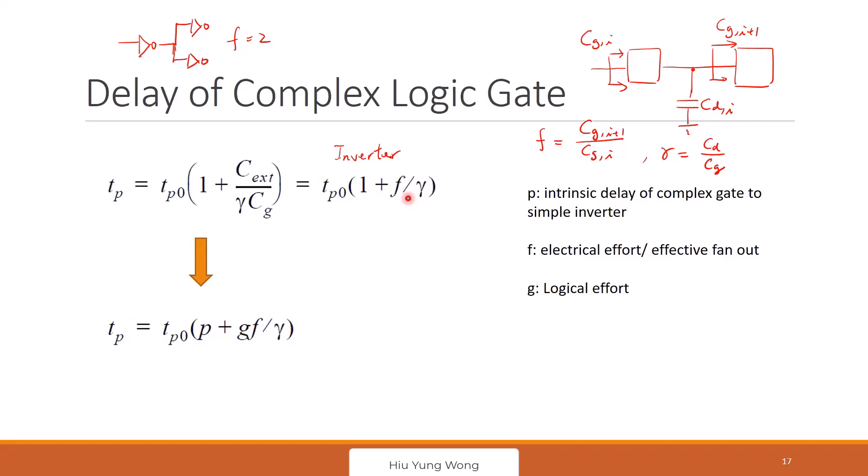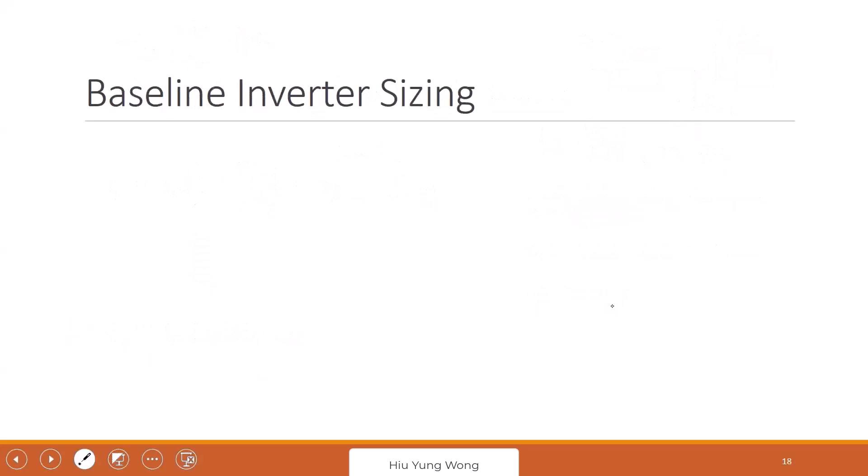So this is the inverter. We're going to use the same framework, but in order to deal with the complex logic, we need to, it becomes this equation. You will see why it is like this later, we won't prove it, right? But it has two more quantities. One is P. This is basically talking about the intrinsic delay of a complex gate to a simple inverter. Another is G. We call it the logical effort. We'll do it one by one.